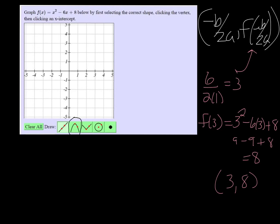So your first point that you're going to plot using the parabola tool is 3, 8, which is a problem because 8 is not an option here.